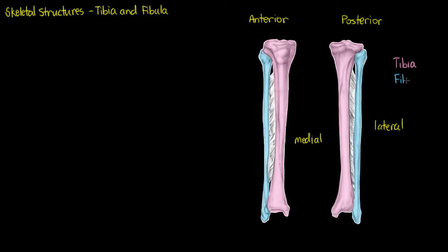The smaller bone highlighted in blue is our fibula, which has a more supportive role in the lower leg.